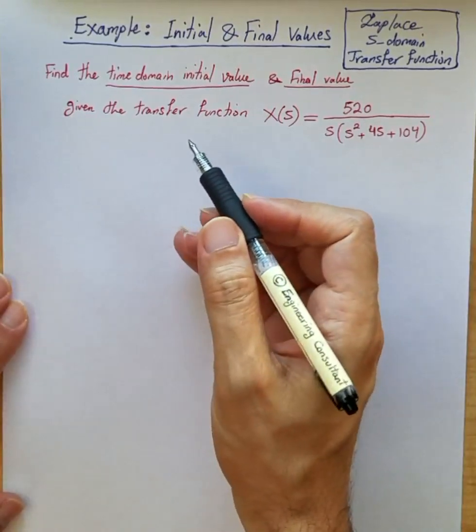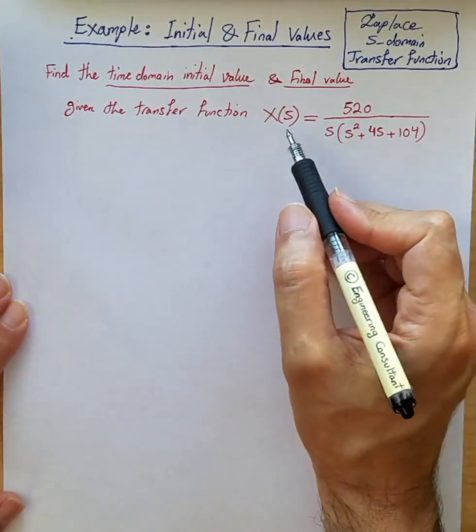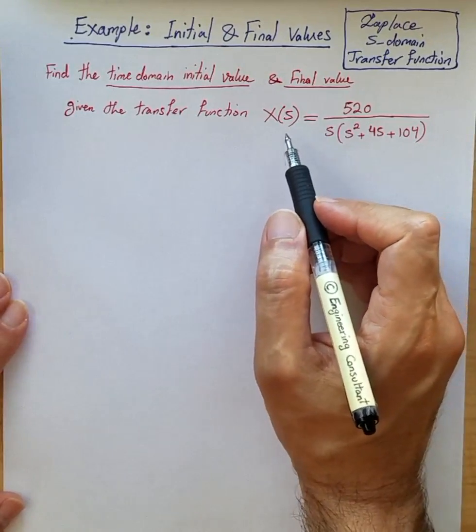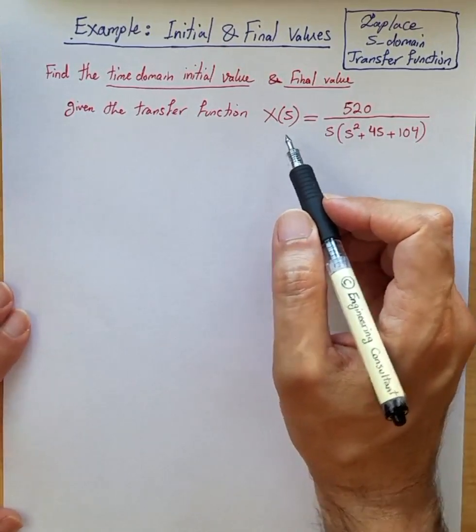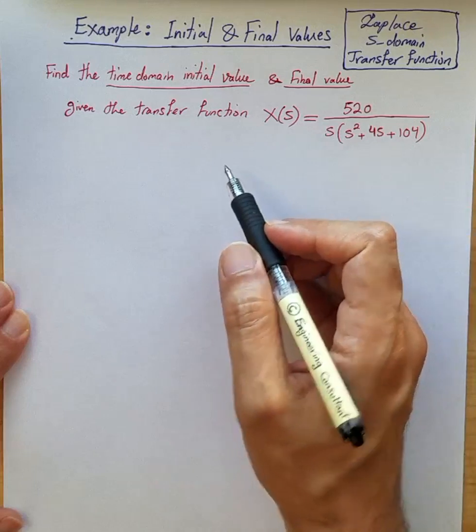Here is an example of initial and final value theorems applied for finding the initial and final value in time domain for a given transfer function in S domain.